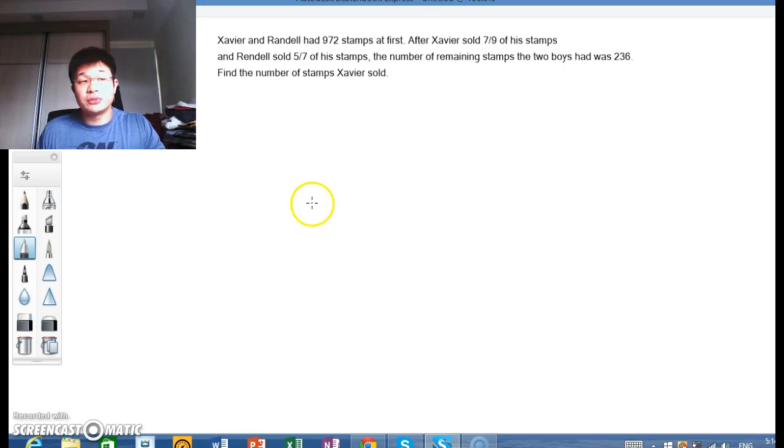Xavier and Randall had 972 stamps at first. Xavier sold 7/9 and Randall sold 5/7 of his stamps. The remaining number of stamps the two boys had was 236. We need to find the number of stamps Xavier sold.